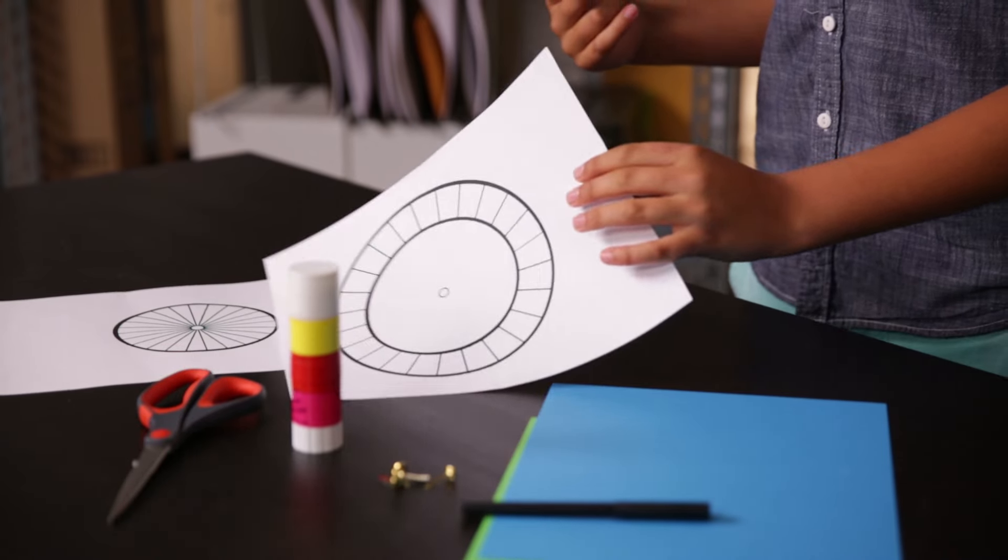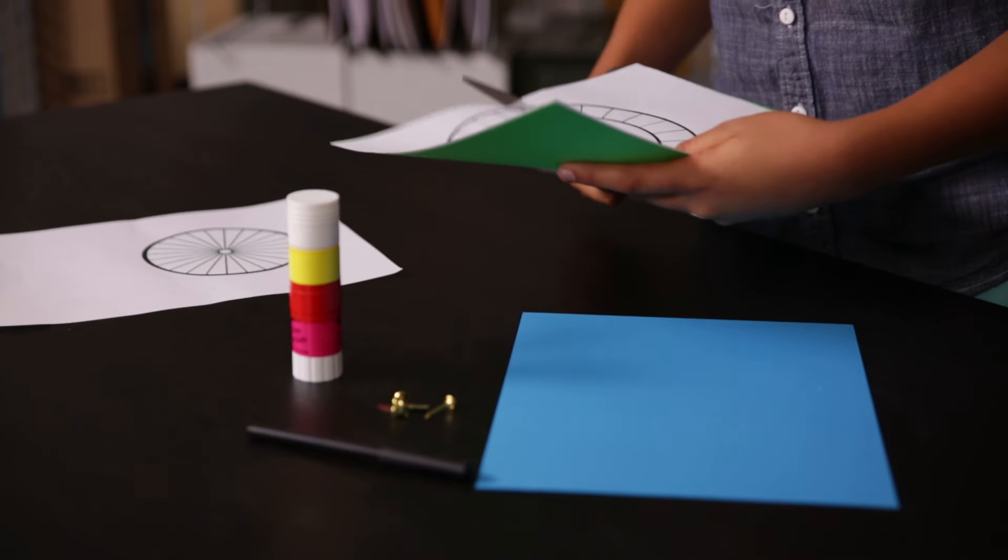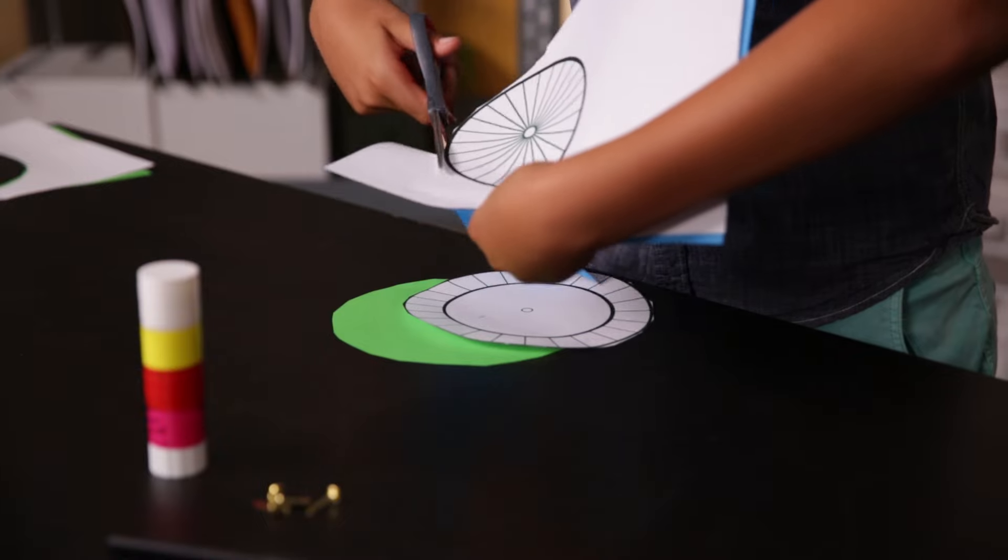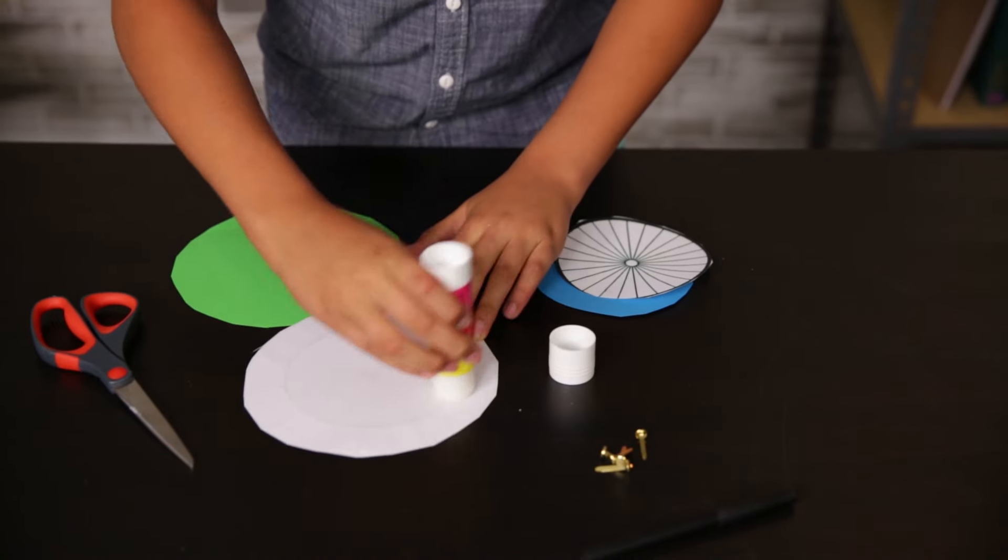There should be two of them, one slightly bigger than the other. Once you've printed the templates, cut them out with the cardstock. Now glue them to the cardstock. This will make the cipher wheel rigid so it lasts longer.